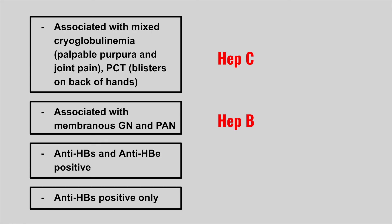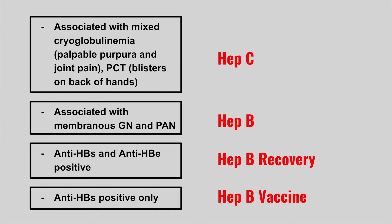The next patient has a lab showing antibodies against HBsAg and antibodies against HBeAg. This is a hepatitis B recovery — it means the patient had hepatitis B and they successfully recovered. Compare this to the next patient who has antibodies against HBsAg positive only, which means the patient had a hepatitis B vaccination.